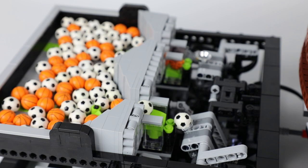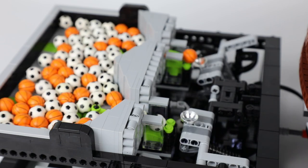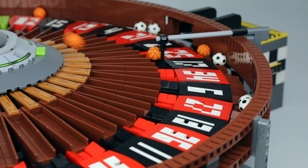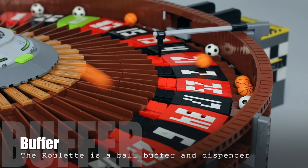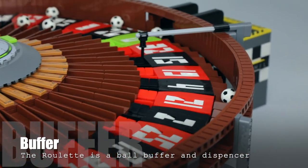The double ball shooter is for feeding the roulette as my first module. The roulette is a big buffer that dispenses one ball per second to the next machine.